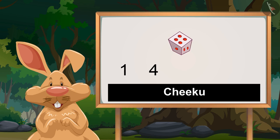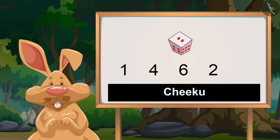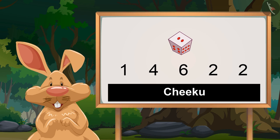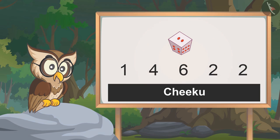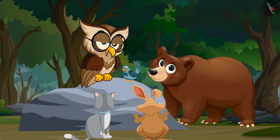Okay, I will roll first: one, four, six, two, two. So Chiku got these numbers on the dice.